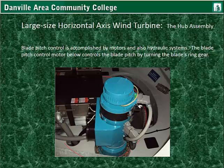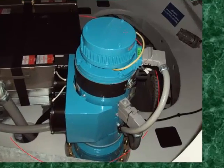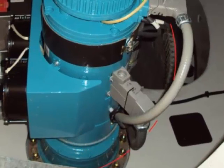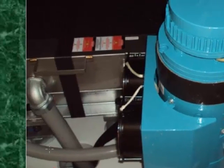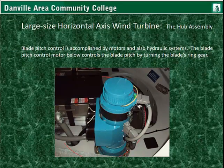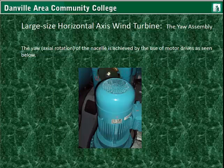The blade pitch control is accomplished by motors and also hydraulic systems. The blade pitch control motor controls blade pitch by turning the blade's ring gear — the drive end has a gear, and the root of the blade on the inside has a gear. Control systems and cooling fans for the motor are also present. The yaw — the vertical axis rotation of the nacelle — is achieved by motor drives that mount through the bed plate to the yaw gear, rotating in sync to slowly turn the nacelle into or out of the wind.